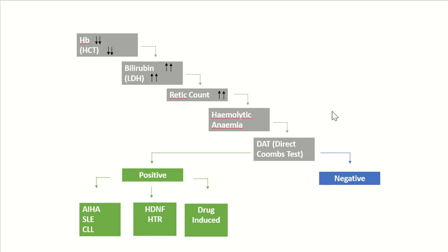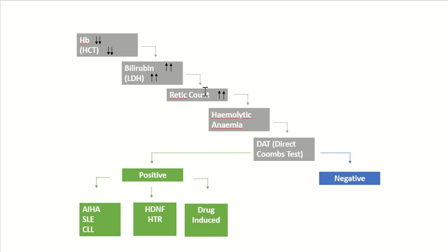This diagram shows: decreased hemoglobin, increased bilirubin and LDH levels, and reticulocyte count will be increased due to the increased number of newly formed RBCs. So in hemolytic anemia, whenever we see these three things — decreased Hb, increased bilirubin or LDH level, and increased reticulocytosis — these together indicate hemolytic anemia.